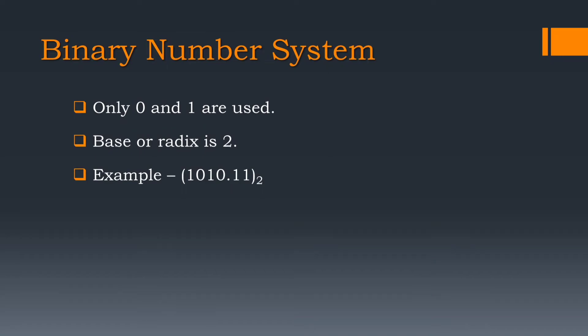In binary number system, only 2 digits 0 and 1 are used, and hence the base of the number system is 2. For example, 1010.11.